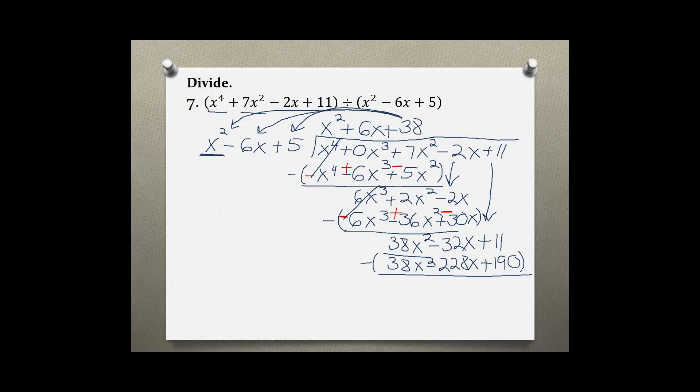Subtracting and changing the signs, we get 38x squared minus 38x squared, which is 0, minus 32x plus 228x.